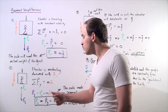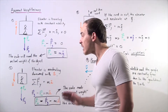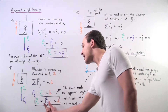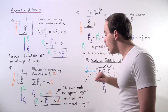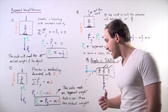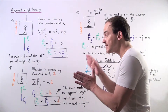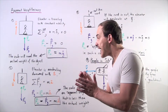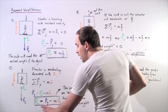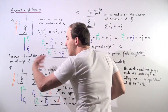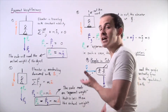Rearranging and solving for the normal force, we find that N equals mg minus ma. This means the scale now reads an apparent weight that is less than the actual weight. The actual weight of the person remains mg, but the apparent weight as read by the scale is now less because our object is accelerating downward in the same direction as g.